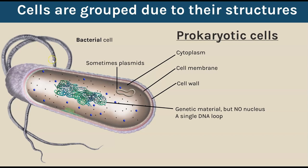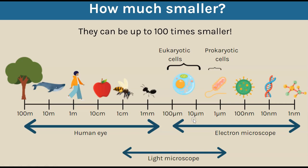You might notice these tail-like structures called flagella - these are again only sometimes found and are there to help the bacteria swim and move around. Because they're only sometimes found, you wouldn't get a mark for mentioning them. You would get marks for pointing out the key structures which are always present: cytoplasm, cell membrane, cell wall, and genetic material in a single loop but not inside a nucleus.